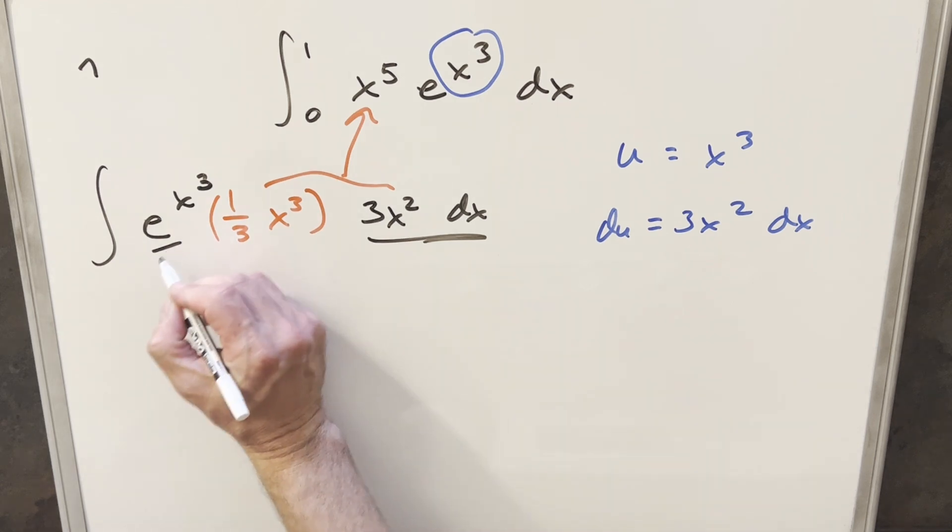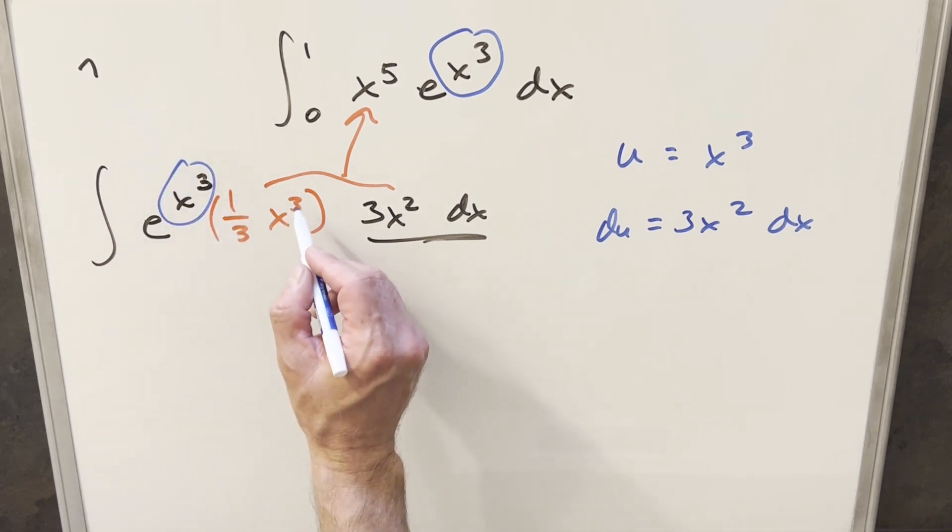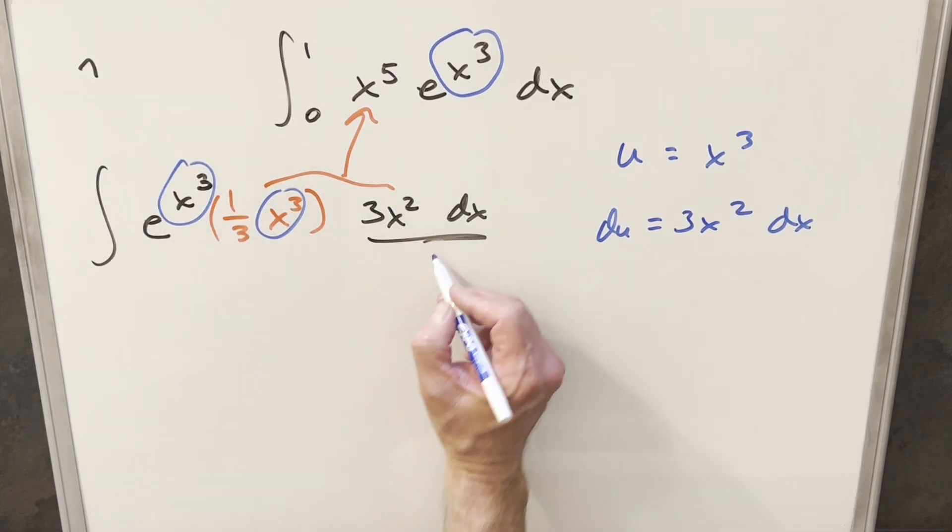And so now with this being our u and this being our du, I can just go ahead. Oh, sorry. And now I think we have this all set up because we've got our u here. We've got our u here now. And then this is just going to be du. So let's go ahead and substitute this.